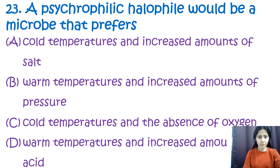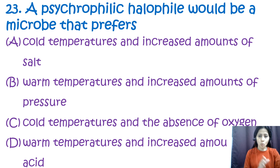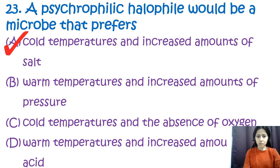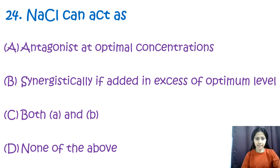Question number twenty-three: a psychrophilic halophile would be a microbe that prefers option A: cold temperature and increased amount of salt, option B: warm temperature and increased amount of pressure, option C: cold temperature and absence of oxygen, or option D: warm temperature and increased amount of acids. Psychrophile means cold-loving and halophile means salt-loving, so the correct answer is option A — cold temperature and increased salt concentration.